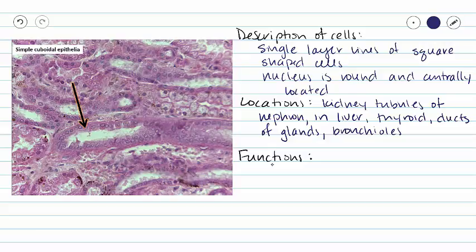What do our simple cuboidal epithelium do in these locations? Primarily, our simple cuboidal epithelium are going to be in charge of processes called secretion and absorption. Let me give you an example of what I mean. In our kidney tubules with our simple squamous epithelium, we filtered our blood in that glomerular capsule, creating something called filtrate.